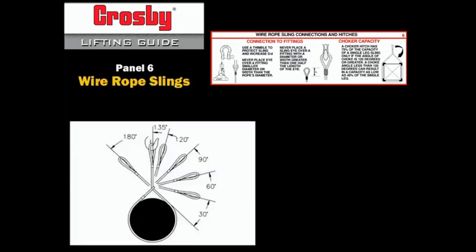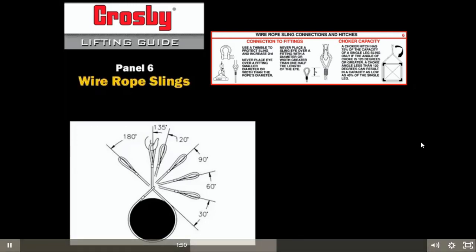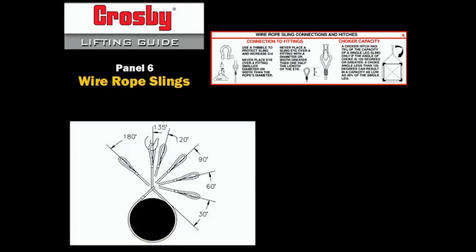The choker hitch is often used when gripping the load and will improve load control. The capacity of a choker hitch is based on the hitch being properly formed. In order for the full choker capacity to be available, the angle of choke for all type slings should be at least 120 degrees.